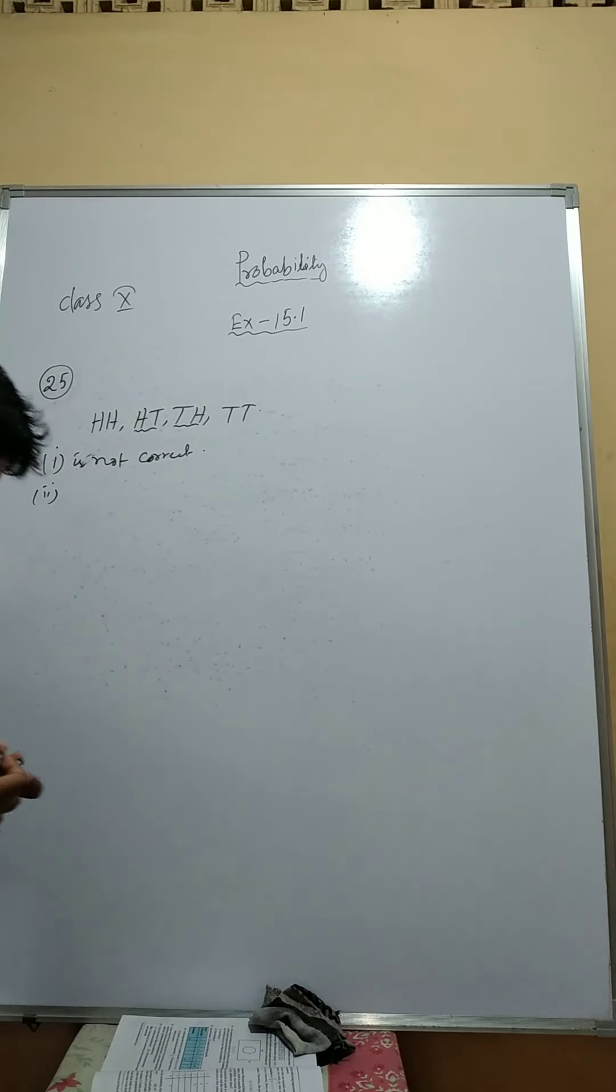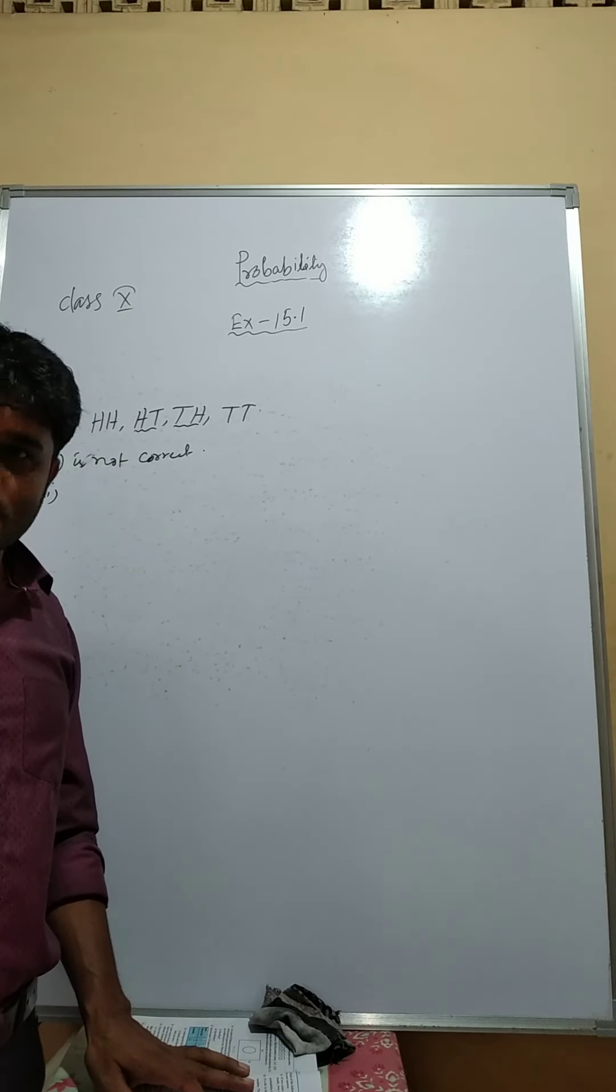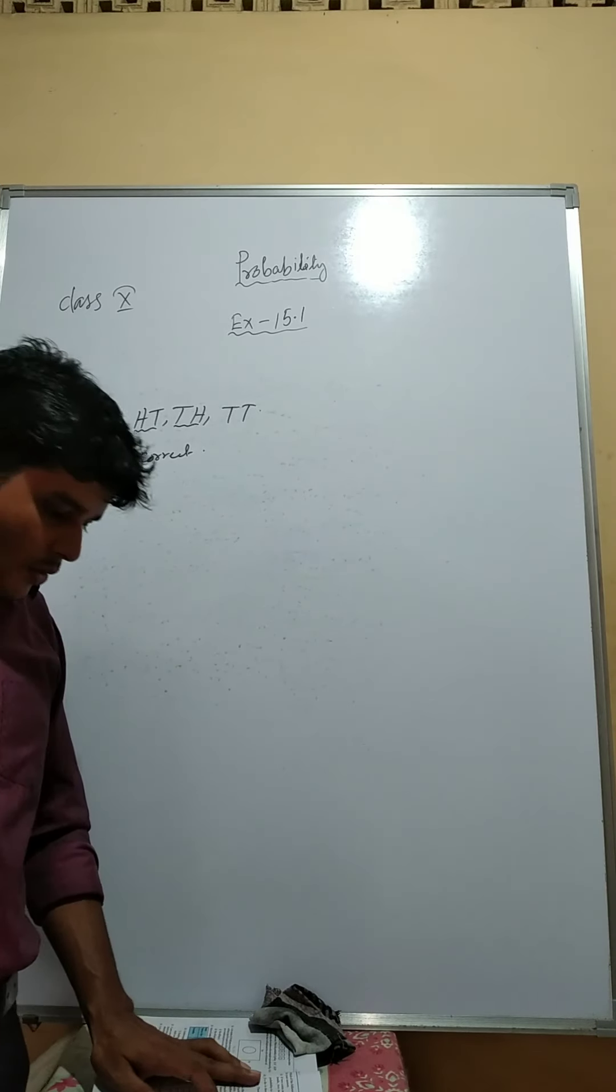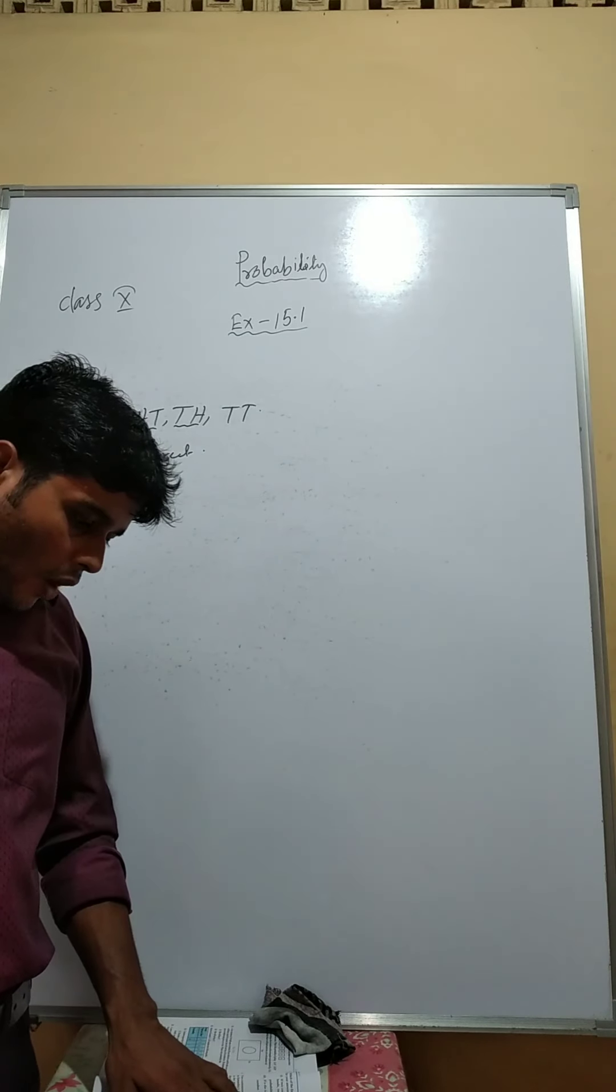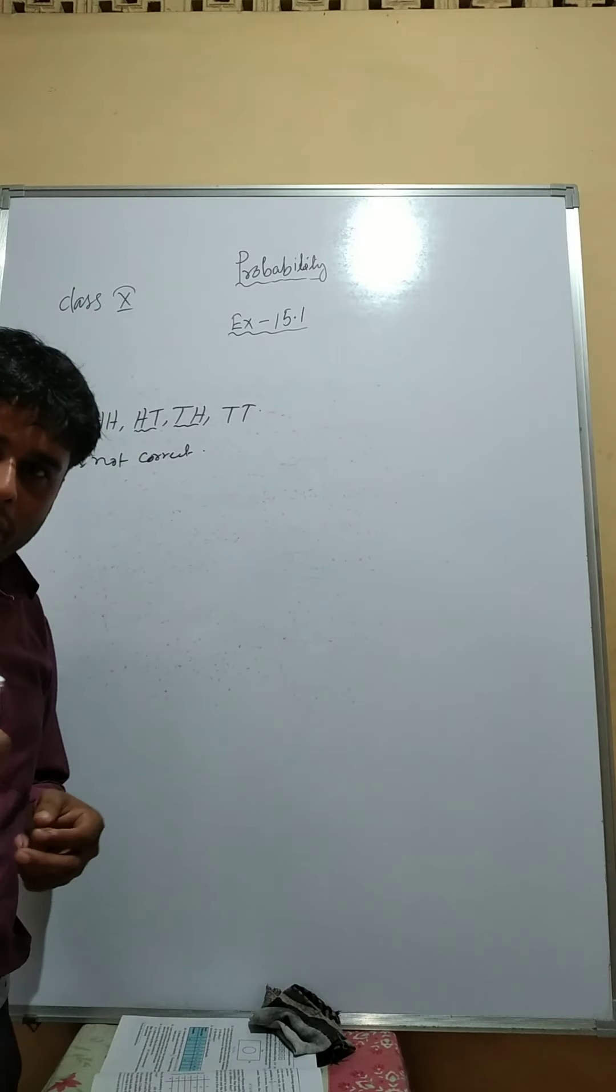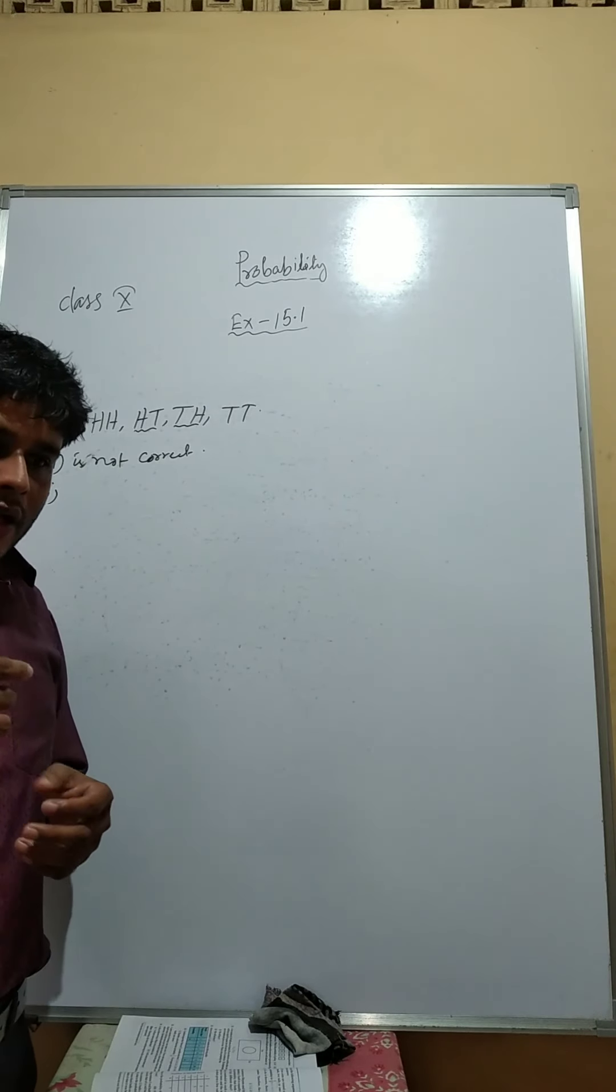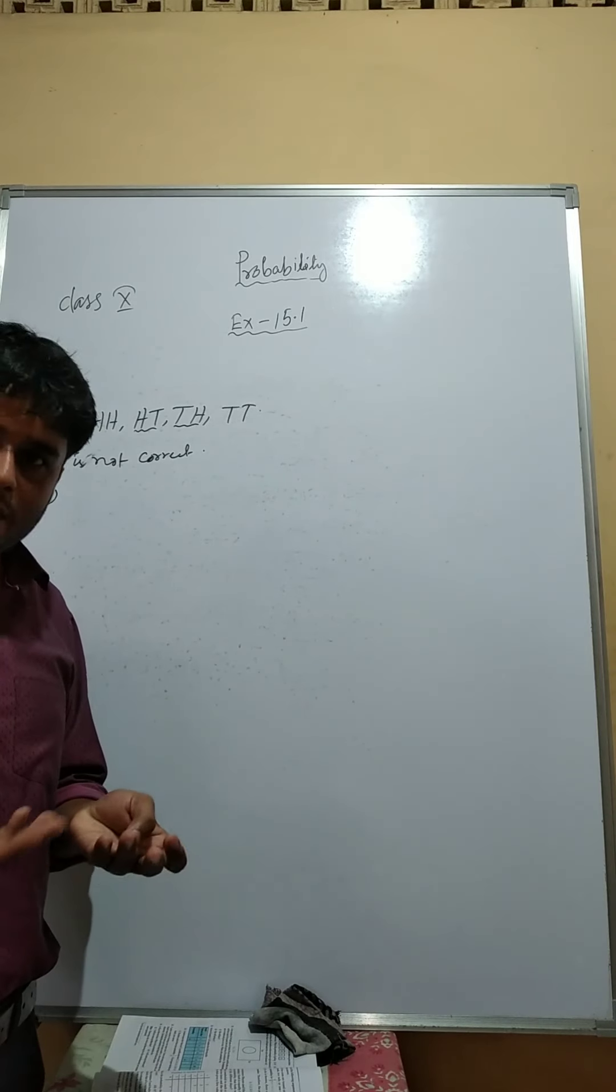Similarly, for the Roman 2, if a die is thrown, die means this die from 1 to 6. There are two possible outcomes: an odd number or an even number. If I throw a die, then the number will come 1, 2, 3, 4, 5, 6.